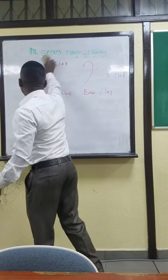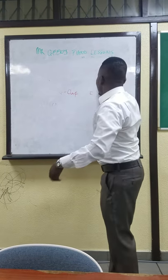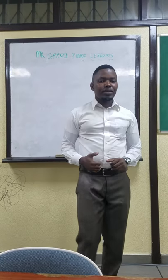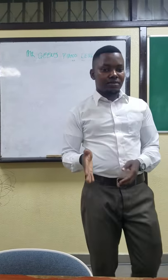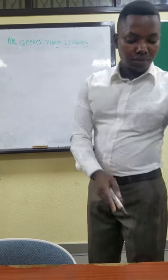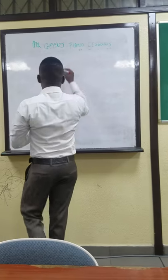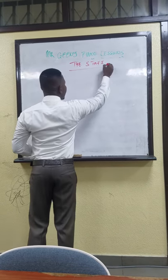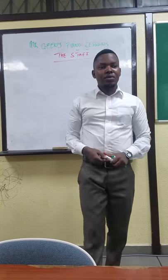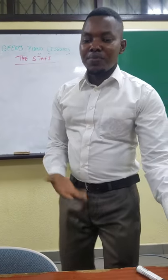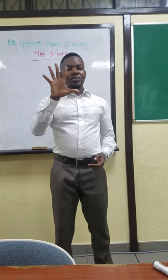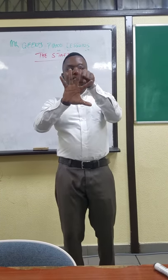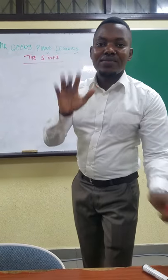Today we are coming to talk about something that will add up to what we covered — the staff. Now, anytime we talk about the staff in music, you can represent it with your palm. A staff consists of 5 lines and 4 spaces. That is the staff: 5 lines and 4 spaces.